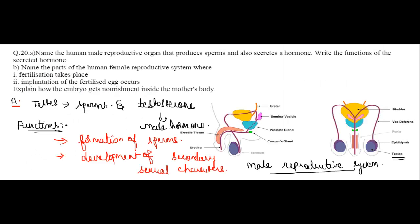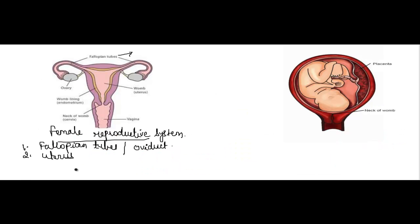The third question: explain how the embryo gets nourishment inside the mother's body. So you can see this picture — basically there is a special tissue called placenta. This placenta is a disc-like structure.